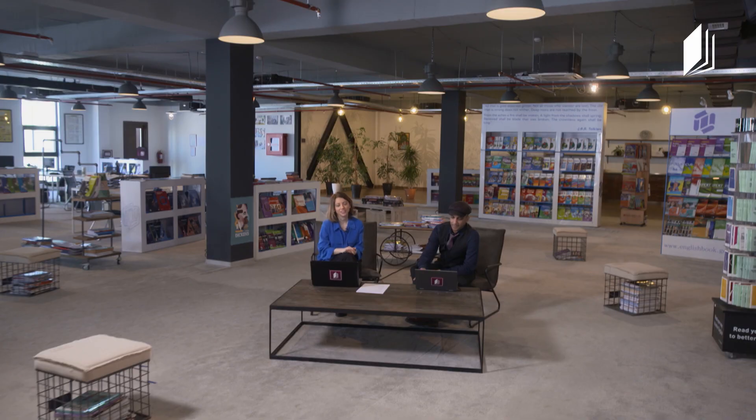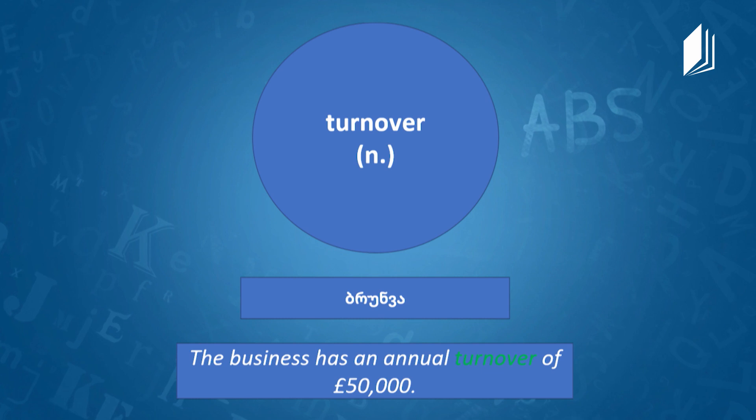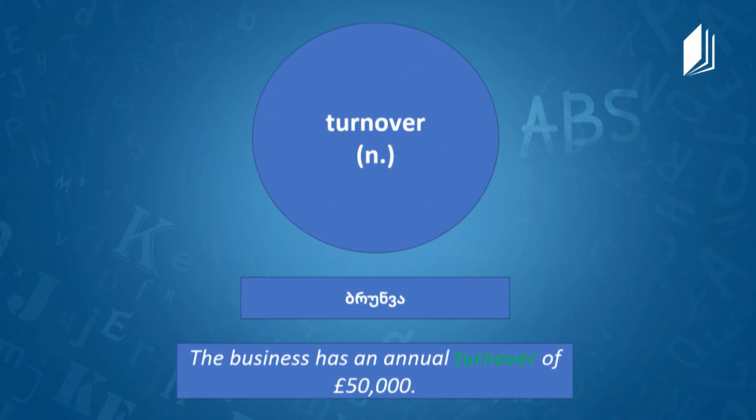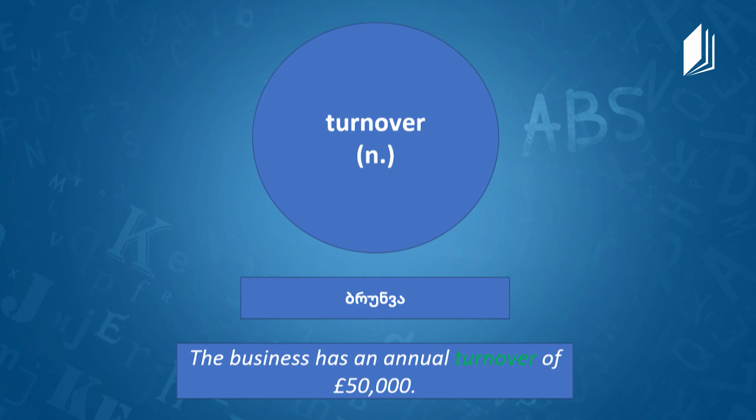Have you ever tried to start a business? Yes, I have tried it in my life and I'll talk about it later. Now let's move on and look at our first set of vocabulary. The first word is 'turnover' — it's a noun. Turnover is the amount of business or profits that you make within a certain specific amount of time. Example: 'The business has an annual turnover of 50,000 pounds.'